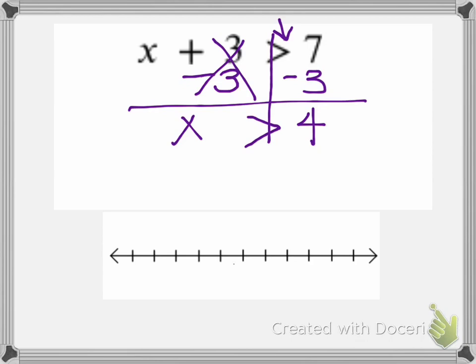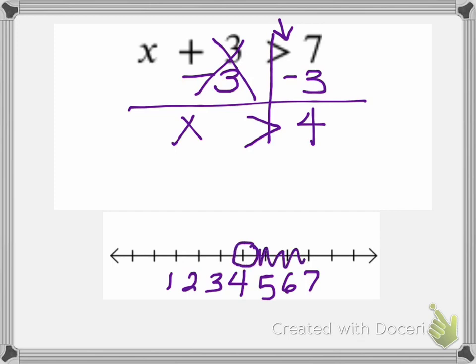So if I graph that, my number I got was 4. I put 3, 2, 1 on my number line. And since it's greater than at 4, I'm going to put a circle at 4 and shade everything to the right. So that means any answer greater than 4 would work — 5 would work, 6 would work, 7 would work, and so on.